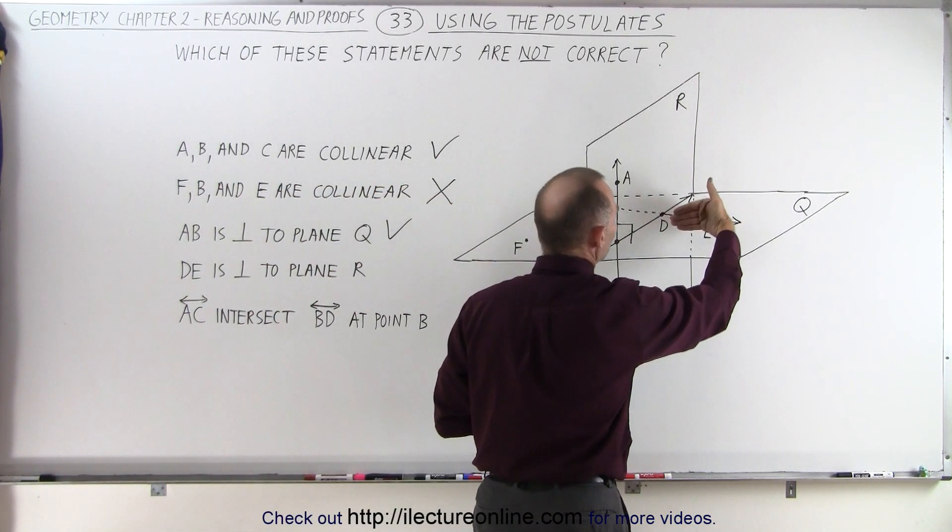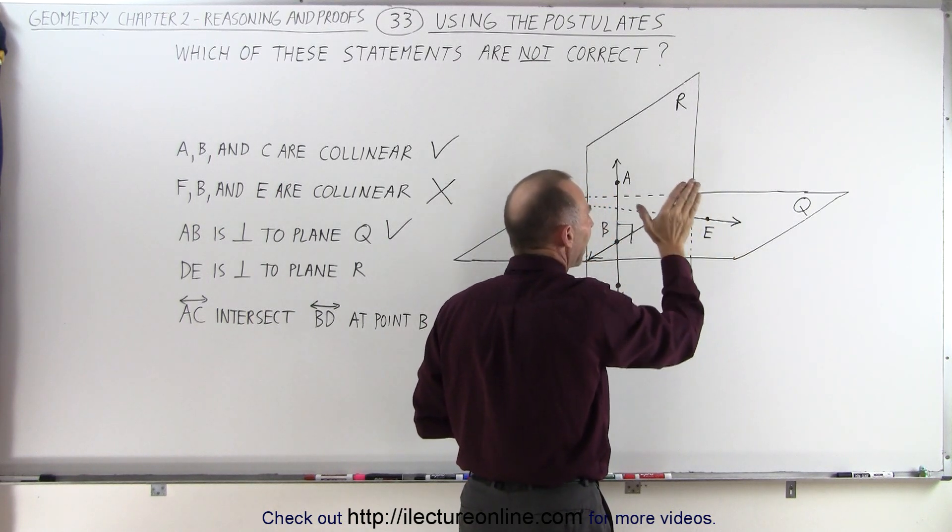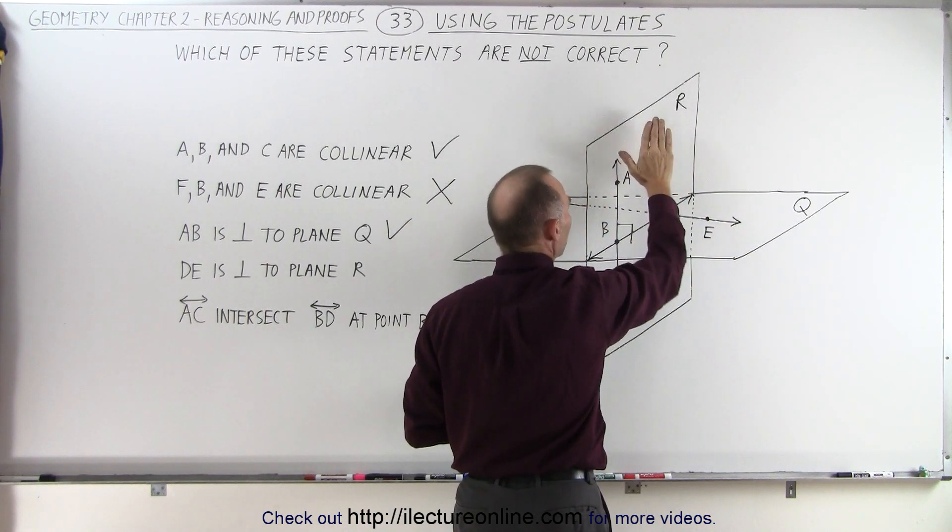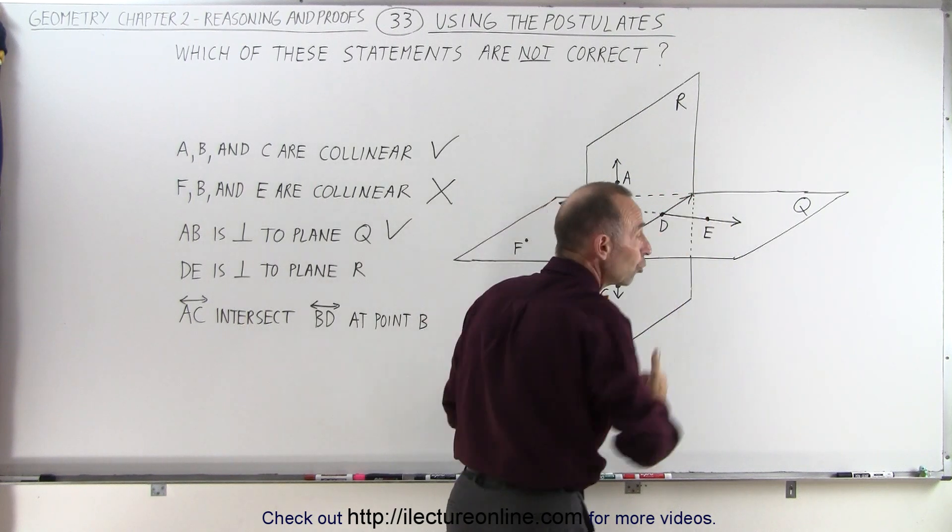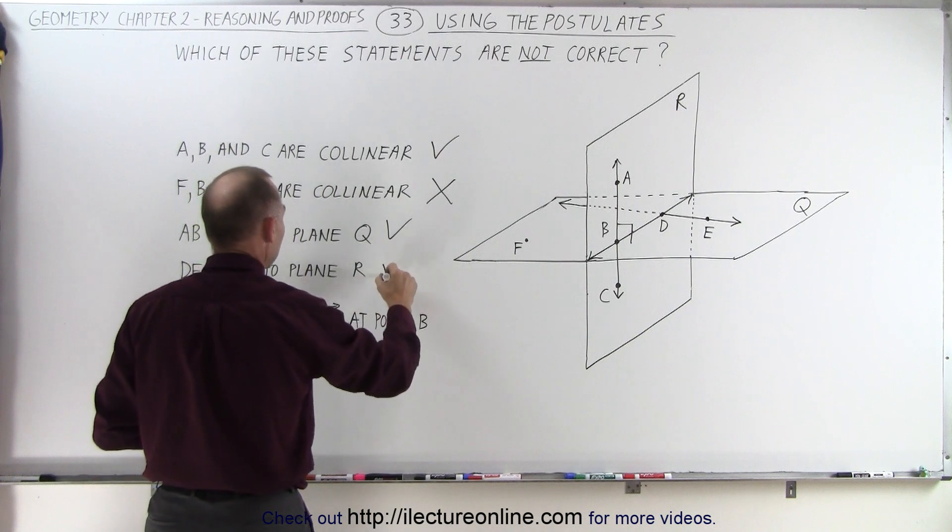Notice that you can have this line oriented in any direction since it lies in the plane, and since plane Q is perpendicular to R, that means that line must also be perpendicular to R. So that's therefore a correct statement.